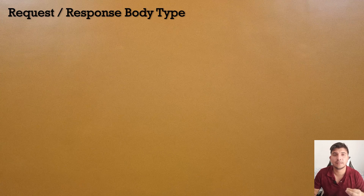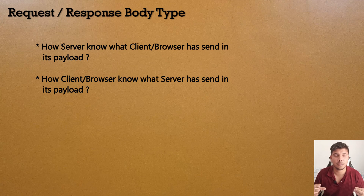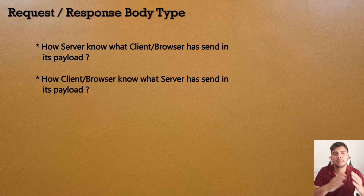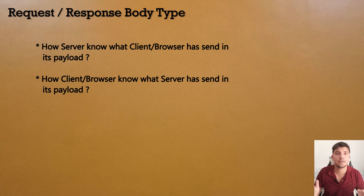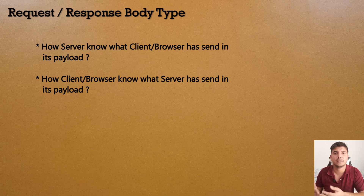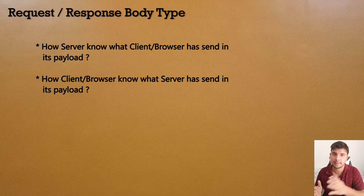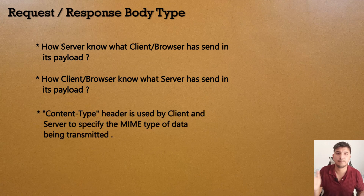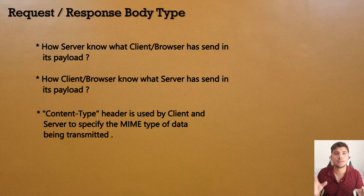Now, how does a server know what type of data or payload the client is sending — whether it's an image, video file, or JSON text? And similarly, when the server sends data back to the client, how does the client know what sort of data is being sent? It could be audio, video, an image, or a PDF file.